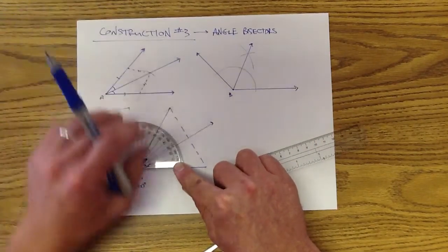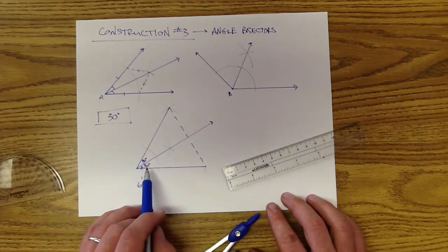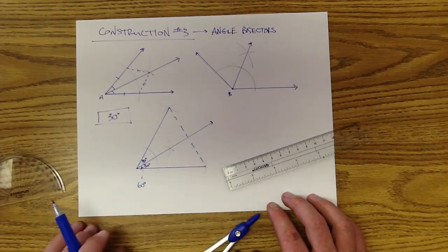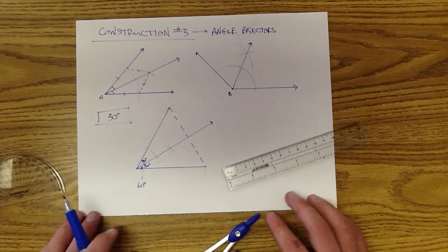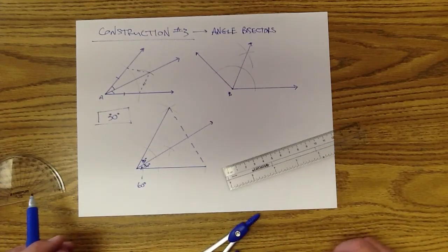But the idea is there. If you bisect a 60 degree angle, it should give you a 30 degree angle. So that's the kind of things that you could see with angle bisectors.